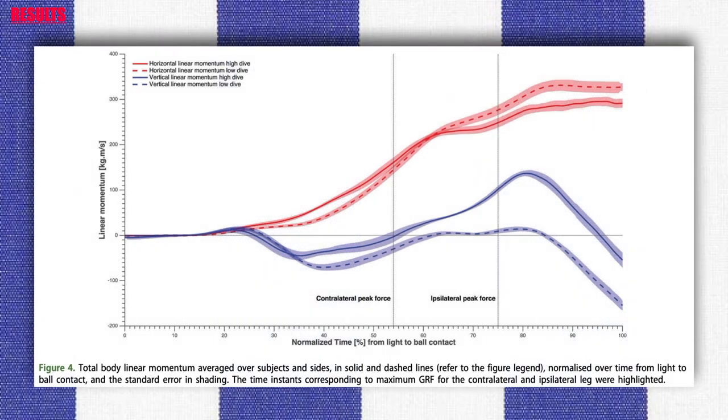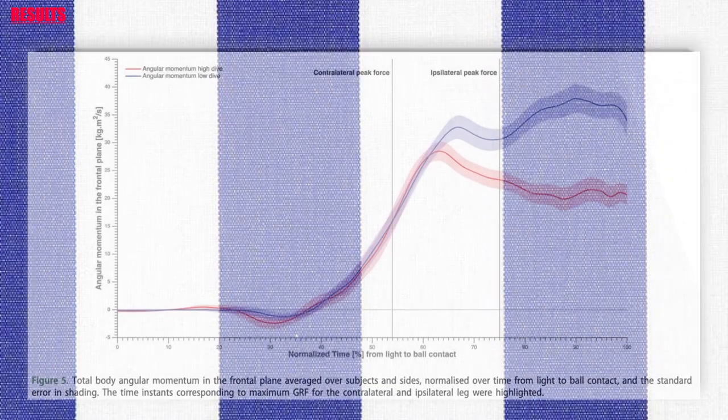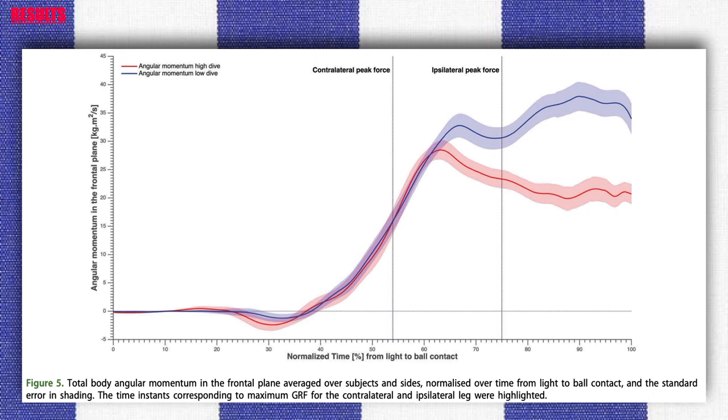Horizontal linear momentum was significantly greater for low dives than for high dives at ipsilateral peak force and at the instant that the peak value was attained. The vertical linear momentum was significantly greater for high dives than for low dives at ipsilateral peak force and at the instant that the peak value was attained.